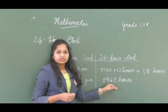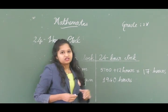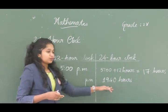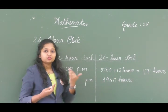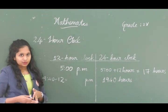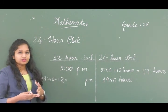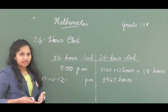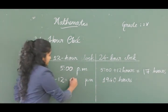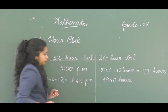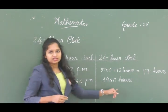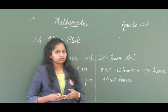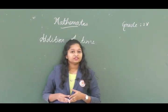Here we have 19:40 hours, which is more than 12. To convert to a 12-hour clock, we subtract 12 from 19:40, giving us 7:40 PM. So 19:40 hours is represented as 7:40 PM in a 12-hour clock.